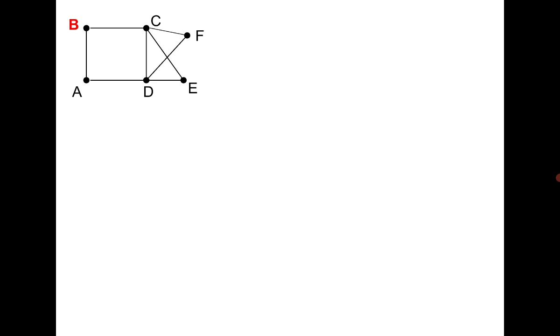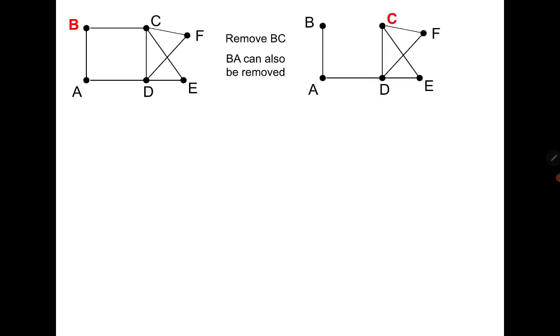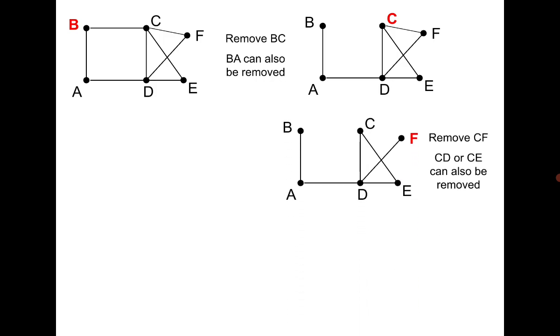We traverse through edges one by one, and once we cover an edge we delete it. From B I can move to A or to C — I choose BC. I go to C and remove edge BC. From C there are three options; I choose CF and reach F.